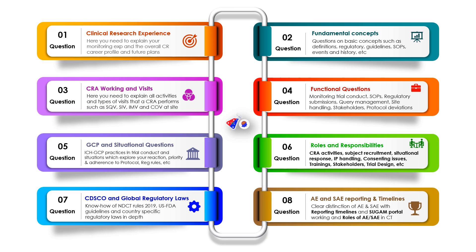Finally, the most important topic for a CRA is AE and SAE reporting. If a subject reports a particular event after taking the investigational product, how do you distinguish between an AE and an SAE? What are adverse events of special interest? What is the SAE reporting timeline and how do you report Table 5 in SUGAM? When a site calls you to say that a subject has passed away or has been hospitalized for more than 24 hours, you need to explain the next steps of action — what report should be prepared within 24 hours and what report is to be submitted within 14 days. If you can answer all eight of these question categories prudently, you can certainly qualify for a CRA role.